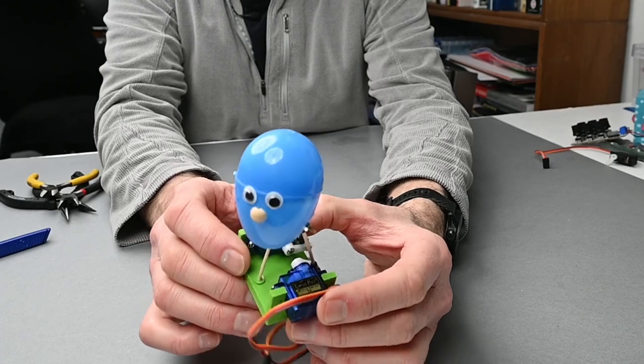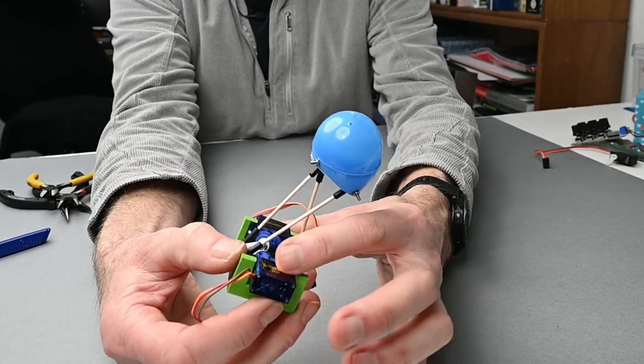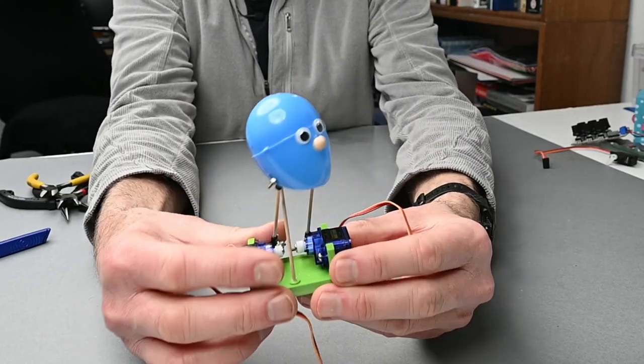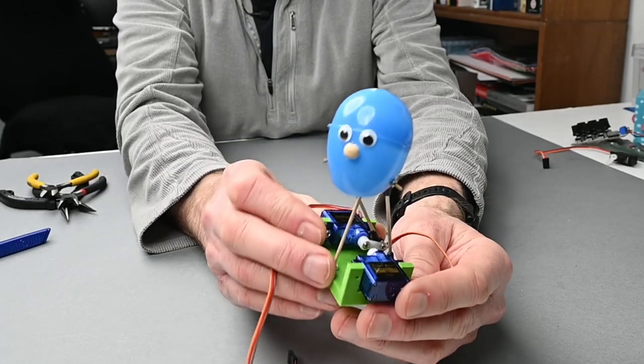So the model is a plastic egg and some joints and a couple of servos there and there and a 3D printed base, and we're going to go through the whole building process now and you can see how it's done.